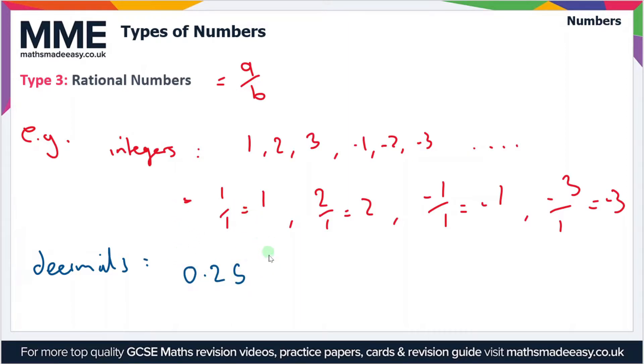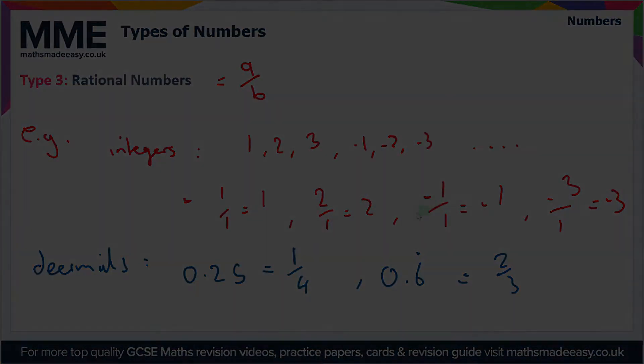Or we can have a recurring decimal, for instance 0.6 recurring. This equals two thirds. Two and three are both integers, this is a fraction, so therefore this is a rational number. All of these are examples of rational numbers.